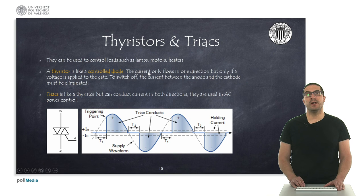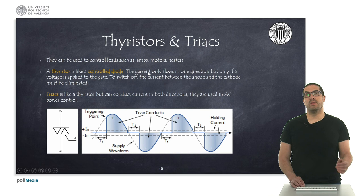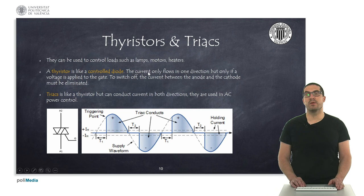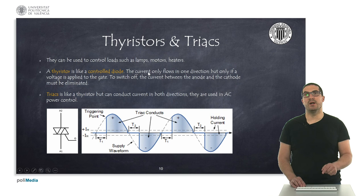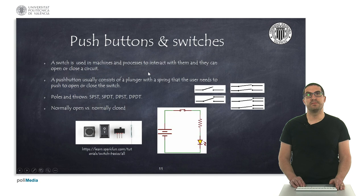Thyristors and triacs can be seen as a special kind of diodes. A thyristor is a controlled diode — if we apply a voltage to a specific pin called the gate, we can allow the current to flow, and the current only stops flowing when it goes to zero. Triacs are basically like a thyristor but they can conduct or drive the current in both directions. We use these devices to regulate the effective amount of an alternating current signal.